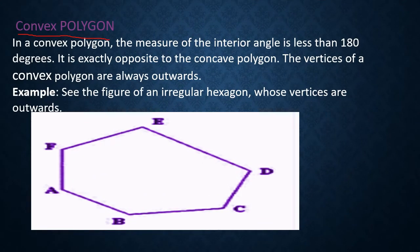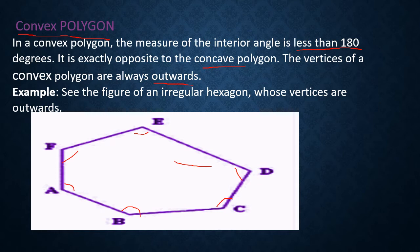In a convex polygon, all interior angles measure less than 180 degrees. It is exactly opposite to the concave polygon. In a concave polygon, any one of the interior angles is greater than 180 degrees. The vertices of a convex polygon are always outwards. For example, in this irregular hexagon, all vertices A, B, C, D, E, F are outwards.